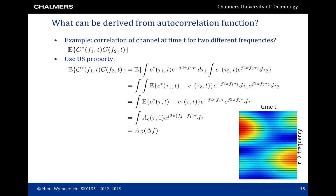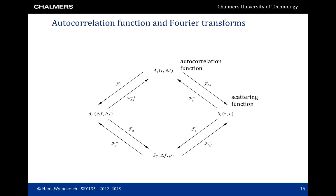So A_C(Δf) is the autocorrelation function in the frequency domain, telling us how quickly the channel varies over frequency at a given time. Starting from the original autocorrelation function, we can take a Fourier transform with respect to τ, leading to an autocorrelation function depending on Δf and Δt. We can also take a Fourier transform with respect to Δt, giving an autocorrelation function depending on τ and a frequency parameter ρ. Finally, a two-dimensional transform with respect to τ and Δt yields a function depending on Δf and ρ — obtainable via either path in this diagram.